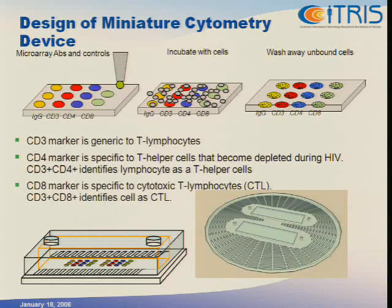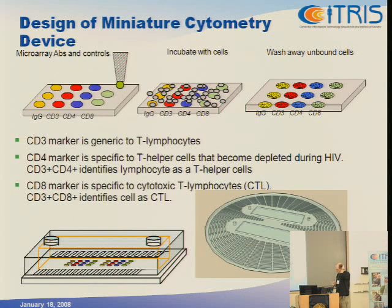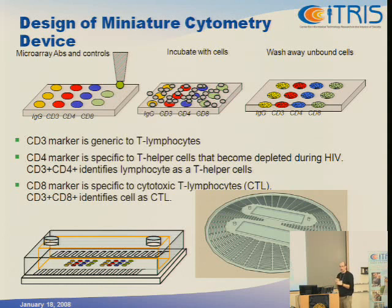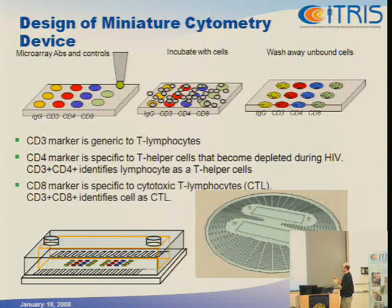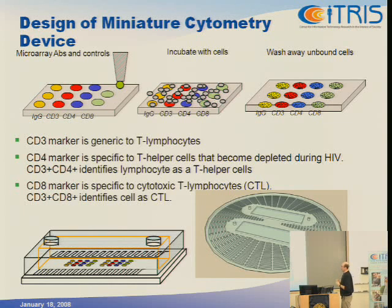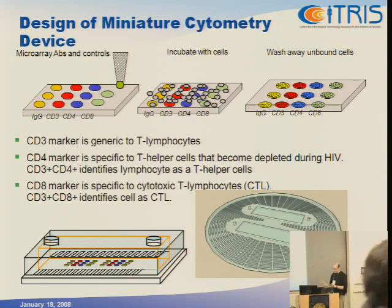We use robotic microarray technology — the same technology used to print DNA arrays — to print arrays of antibodies. The beauty of this is that you can have positive controls, negative controls, and antibodies of interest all in one miniature array. This array can be placed inside a microfluidic chip, minimizing the blood volume required for analysis. It could therefore be a low-volume and low-cost solution for quantifying leukocytes.